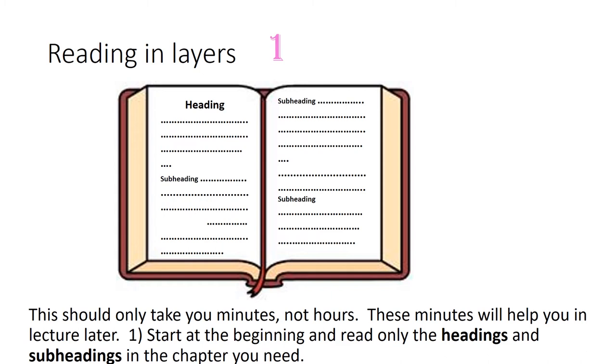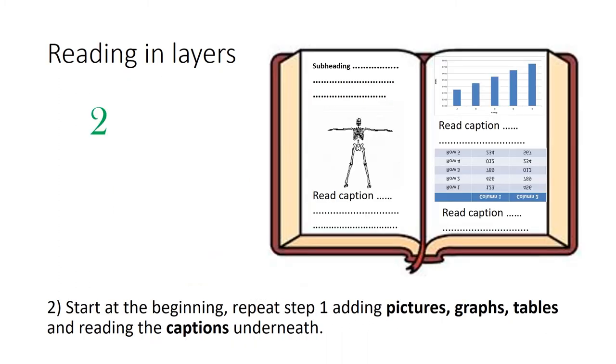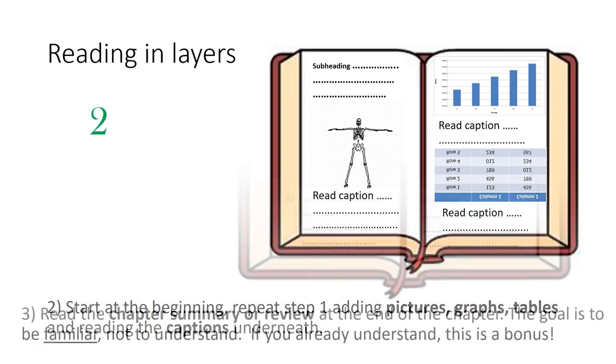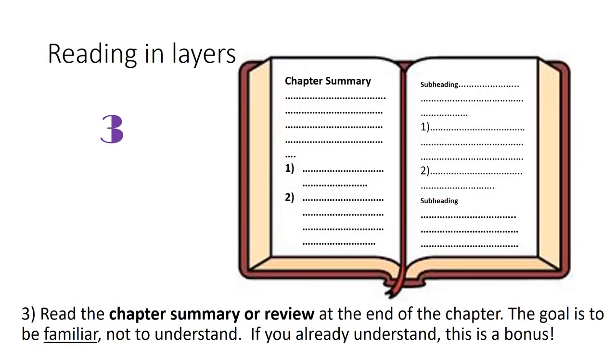First, start at the beginning and read only the headings and subheadings in the chapter. Second, start at the beginning, repeat step one adding pictures, graphs, tables, and reading the captions underneath. Third, read the chapter summary or review at the end of the chapter. The goal is to be familiar, not to understand. If you already understand, this is a bonus.